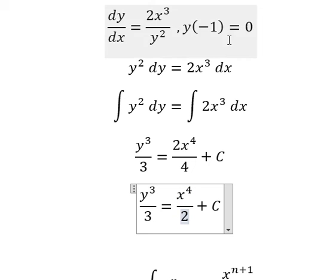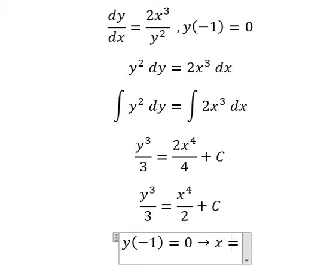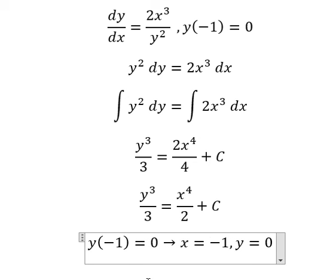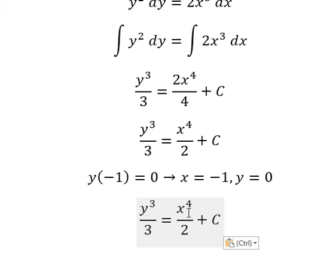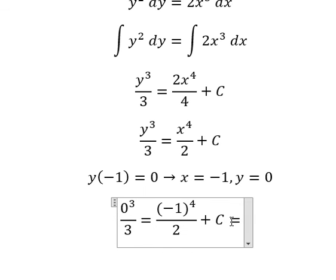Now we have the conditions. That means when x equals negative number 1, y equals number 0. So I will put number 0 and negative number 1 here to find the value of C.